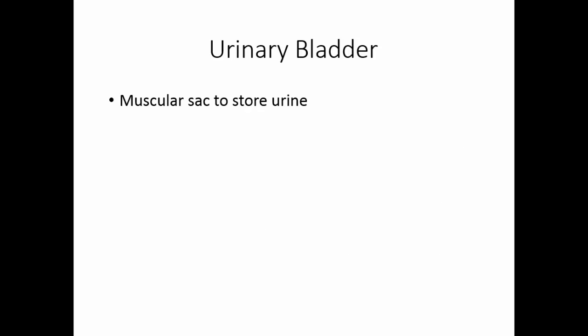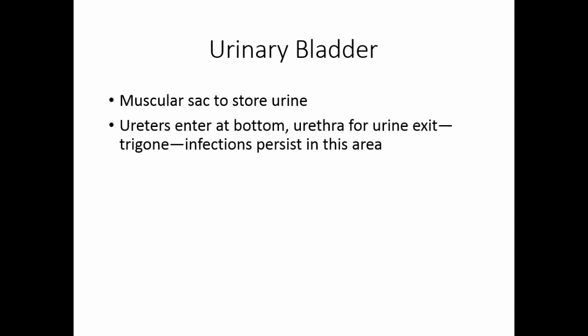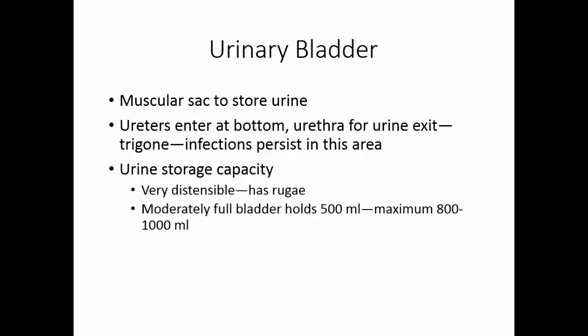The urinary bladder is a muscular sac that stores urine until it's convenient to eliminate it from the body. The ureters enter at the bottom, and the urethra for urine exit is also at the bottom, forming a little triangle of openings called the trigone. Because urine tends to stay in this area, this is where infections persist in the urinary bladder. The urinary bladder is very distensible — like the stomach, it has rugae so it can collapse down but then distend quite a bit.